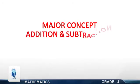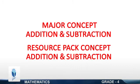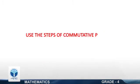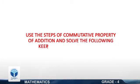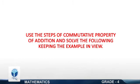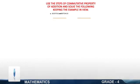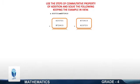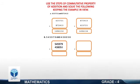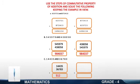Page 50. Major Concepts: Addition and Subtraction of Whole Numbers. Resource Pack Concept: Addition and Subtraction of Whole Numbers. Use the steps of commutative property of addition and solve the following keeping the example in view. A: 623,721 plus 872,430, answer is 1,496,134. B: 545,979 plus 438,058. C: 14,435 plus 36,783.